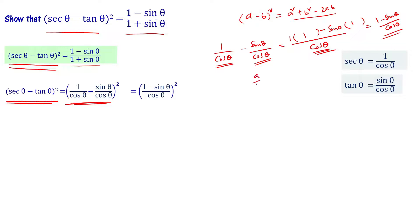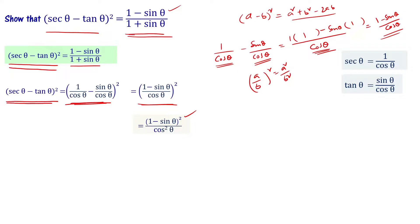Applying the rule that a by b whole square equals a squared divided by b squared, we get 1 minus sin theta whole squared divided by cos squared theta. Now in the denominator we have cos squared theta, and in the numerator we have 1 minus sin theta whole square. We need to relate this to 1 plus sin theta using a trigonometric identity.